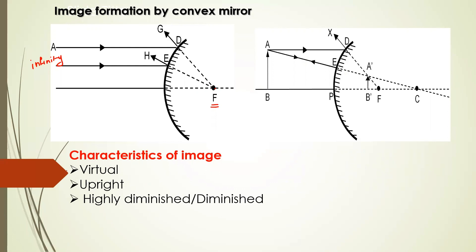Now for the second case of the convex mirror, the object is placed somewhere closer than infinity. My rays are diverging, and once I trace them, this is my first reflected ray and this is my second reflected ray. I make them meet behind the mirror — this is the intersection point and here is my image formed. But it is still behind the mirror, so this is virtual and always upright. Compared to the object size, this is a diminished image. When the image is point-sized it is highly diminished, but in this second case it is still a diminished image.